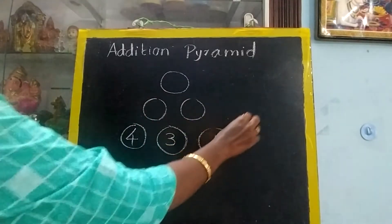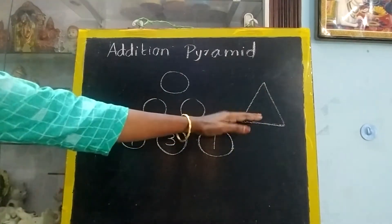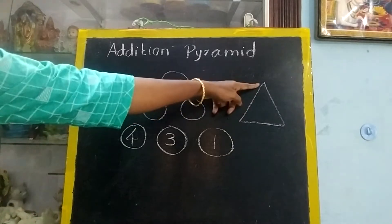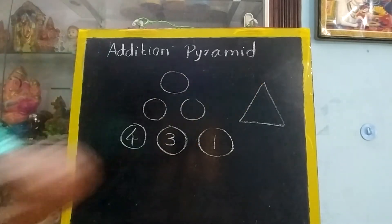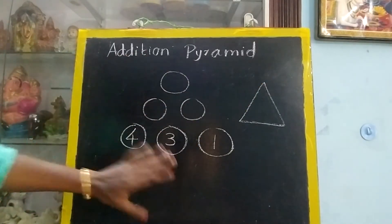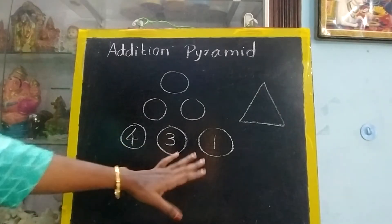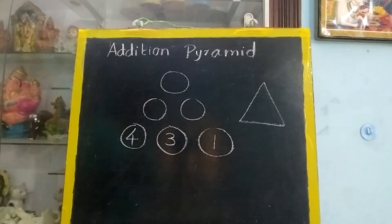Have you seen a pyramid? A pyramid will be like this. The base will be broad and at the top it will be sharp. So here it is addition pyramid. With the numbers we are going to build the pyramid with addition also.